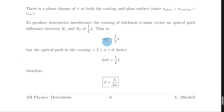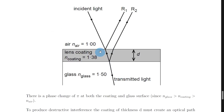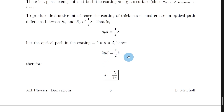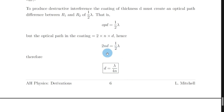We also have an expression for optical path difference. The light has travelled down through the lens coating a distance d and then back up, so it has travelled a distance of 2 times d. To get optical path difference we multiply by the refractive index of that material, giving 2 times n-coating times d, which we write as 2nd. So the optical path in the coating equals 2nd, where d is the lens coating thickness and n is the refractive index of the lens coating. We can therefore write 2nd equals lambda over 2, and dividing both sides by 2n gives d equals lambda over 4n.